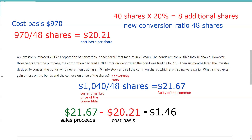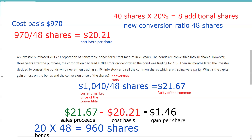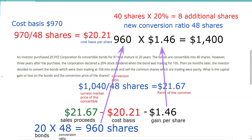So I made $1.46 per share. I have 20 bonds each convertible into 48 shares, giving me 960 shares total. At $1.46 per share times 960 shares, I have a long-term capital gain of $1,400. That is the answer to the first part of the question.